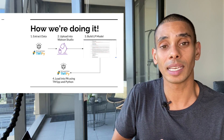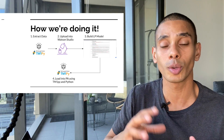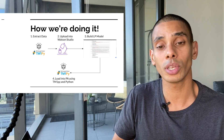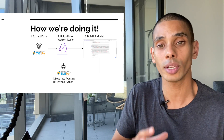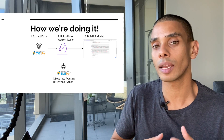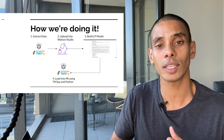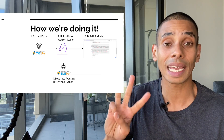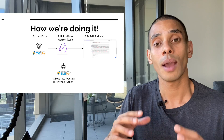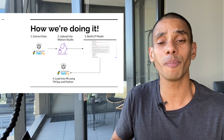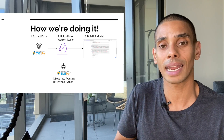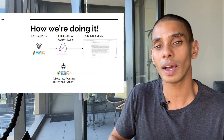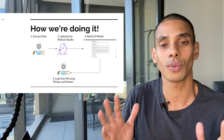There are a couple of moving parts to this. Specifically, we're going to be connecting to our TM1 cube using TM1Py to draw that data out. We'll then work with it inside of Watson Studio using pandas for data pre-processing. Once that's done, we'll prototype our linear programming model using docplex. Remember, it consists of three key things: our goals, our variables, and our constraints. Once we've solved our problem, we'll push our results back into Planning Analytics, all from Watson Studio, using the REST API.